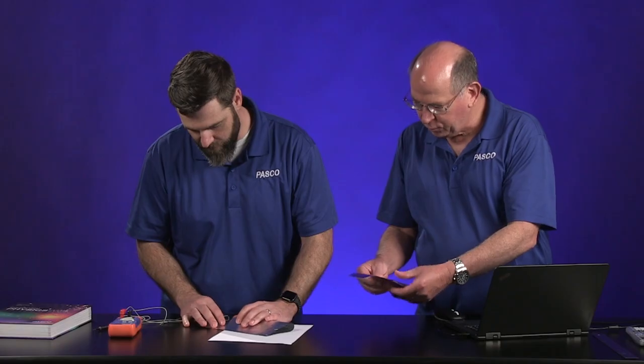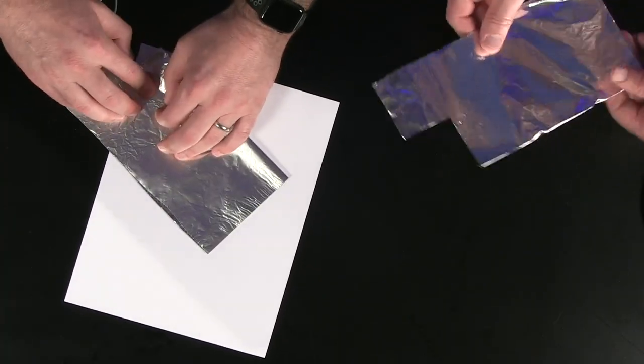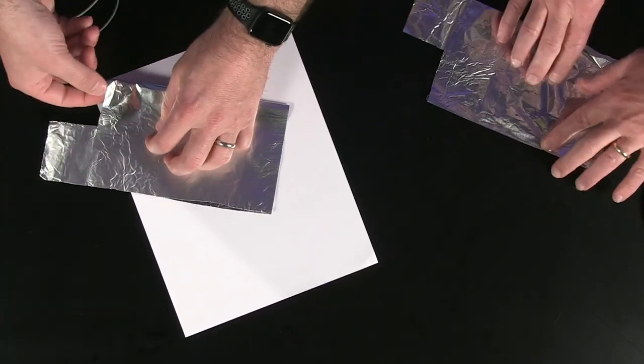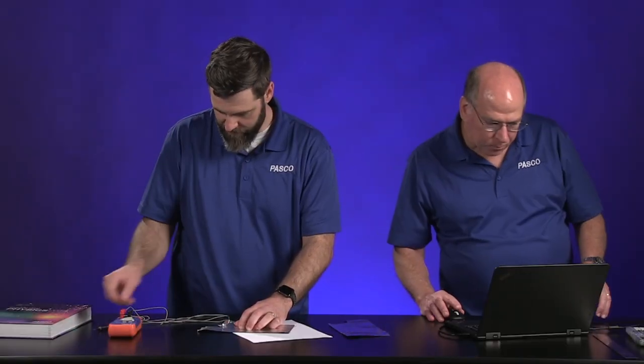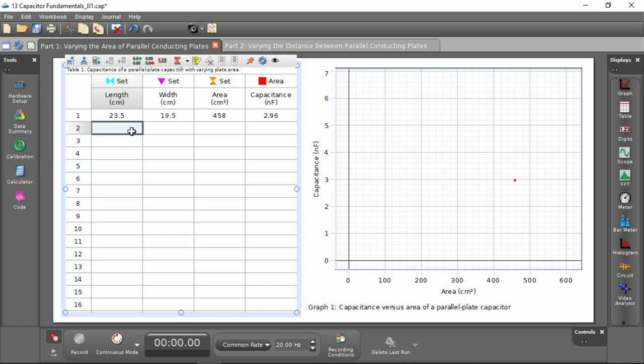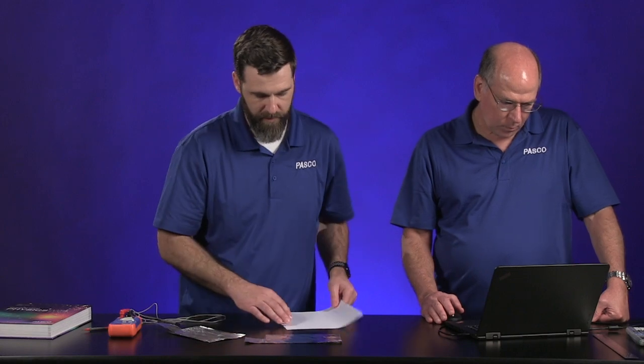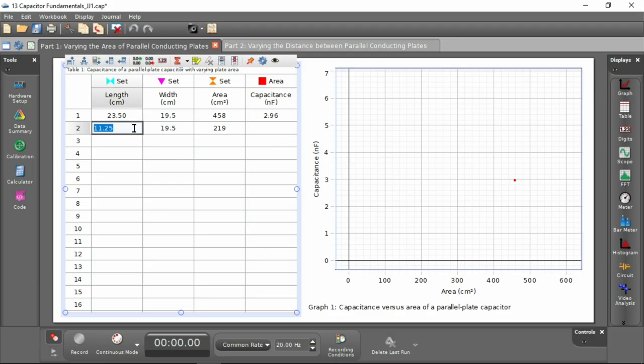Does it matter if we have the shiny side out or not? No, it shouldn't. Good. Because we're different. And so I'll just put the length now as half of what it was. So it'd be 11.25 and the width is the same. Oh, that's not right. It's 11.75.